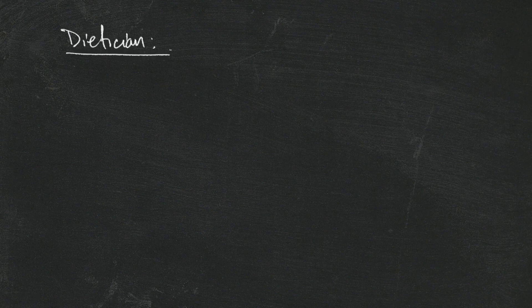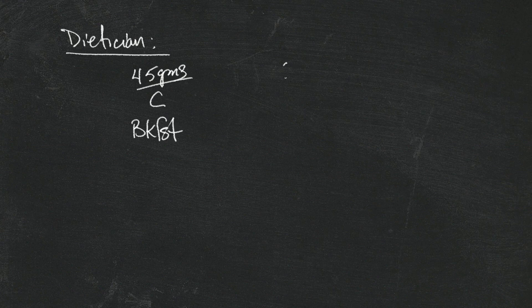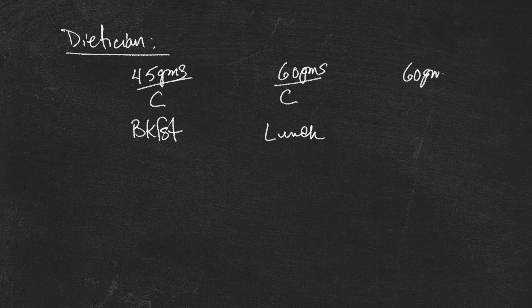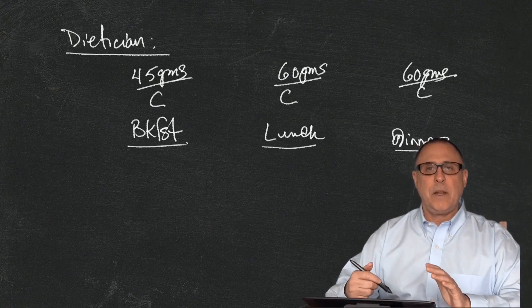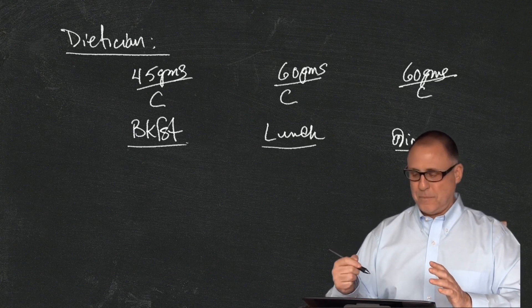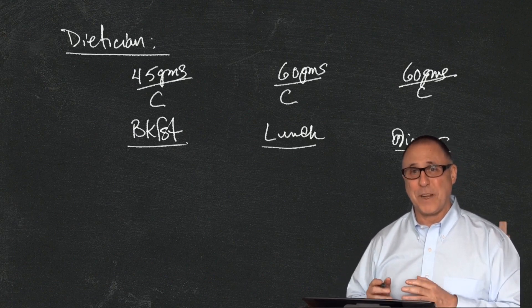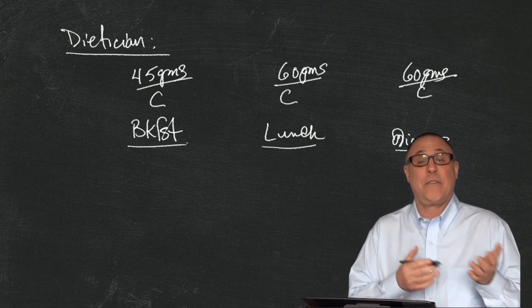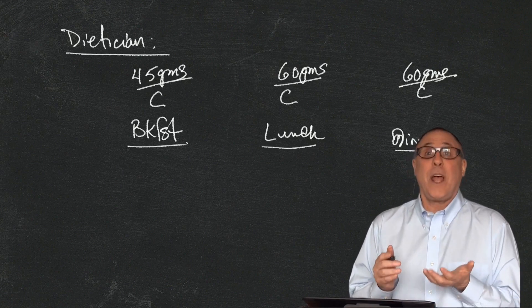So your dietitian will say, based on your height, weight, and caloric needs: 'I want you to have 45 grams of carb at breakfast, 60 grams of carb at lunch, and 60 grams of carb at dinner.' Having diabetes doesn't mean we're allergic to sugar — it means we don't have insulin in our body. We have to eat like anybody else; we just have to compensate with insulin. There's no food that's not okay for a person with diabetes.